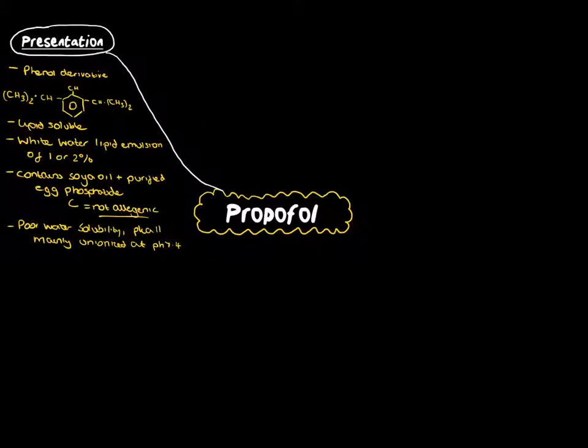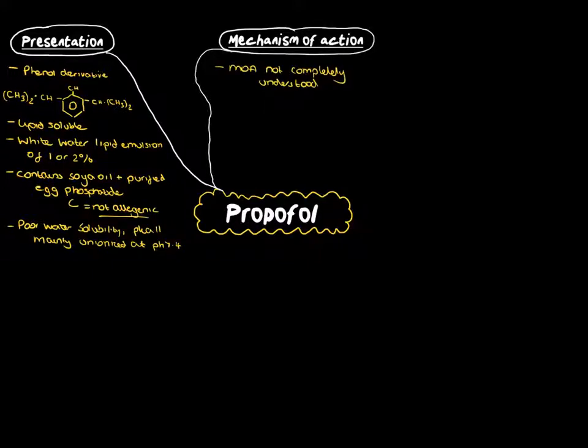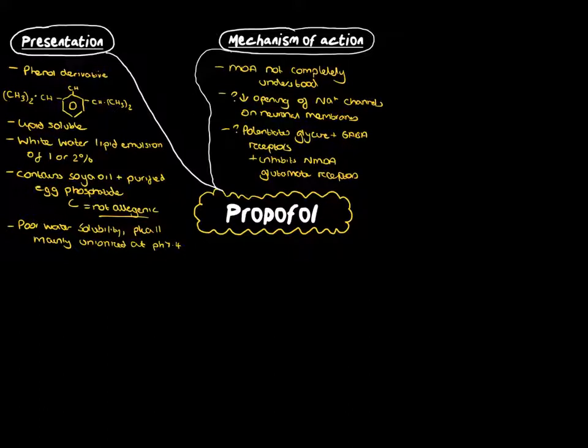When we think about the mechanism of action, it's not actually completely clear for propofol, even though we use the drug quite extensively. It's thought to maybe reduce the opening of sodium channels within the neuronal membranes, but that's hypothesised only. There's also a hypothesis that it potentiates glycine and GABA receptors, and possibly also has an inhibitory effect on NMDA glutamate receptors within the neuronal tissue as well.